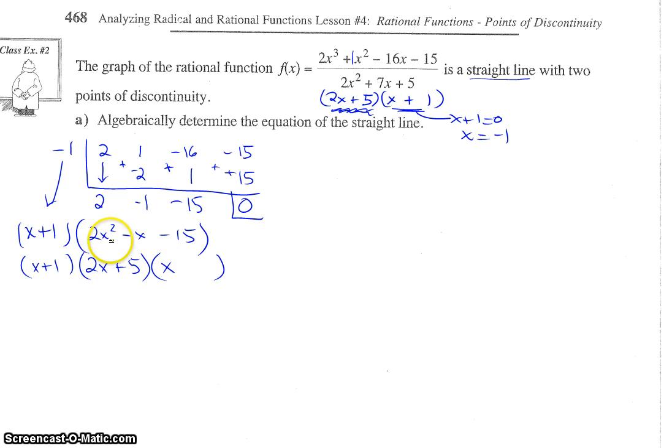And then figure out what the other one would be. 2x times x gives us 2x squared. 5 times what gives us negative 15? And have to be negative 3. Do a little check to make sure we get the inside function. The outside is negative 6x, 2 times negative 3. And the inside is positive 5x, so that would give us negative x. And there we go.